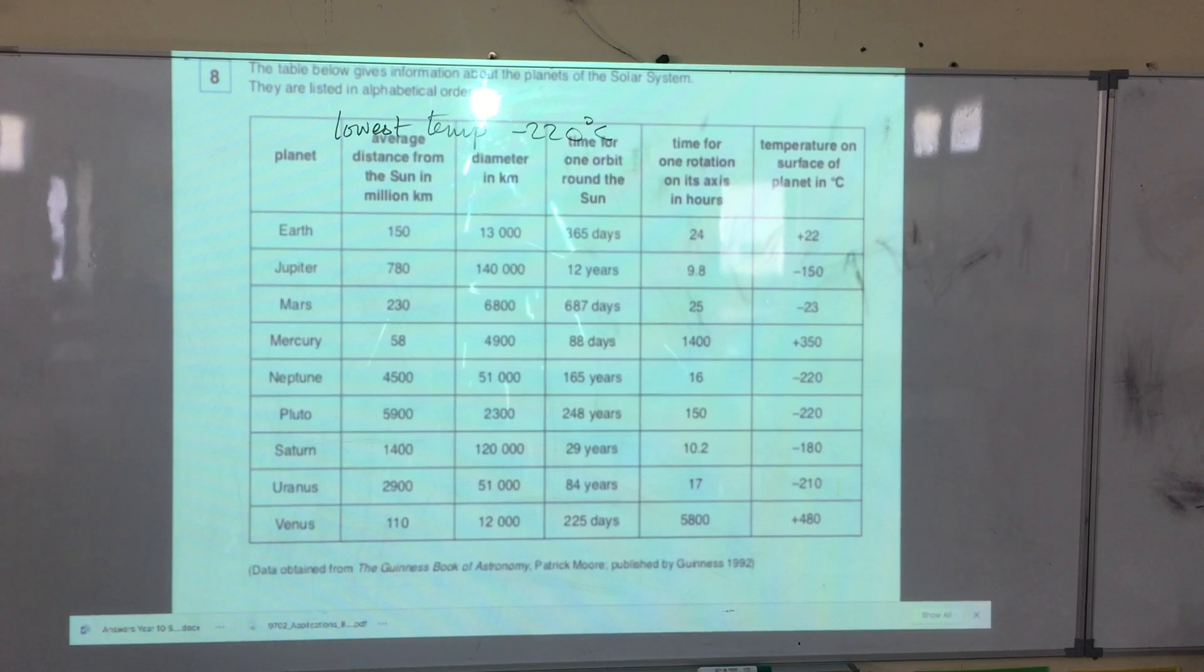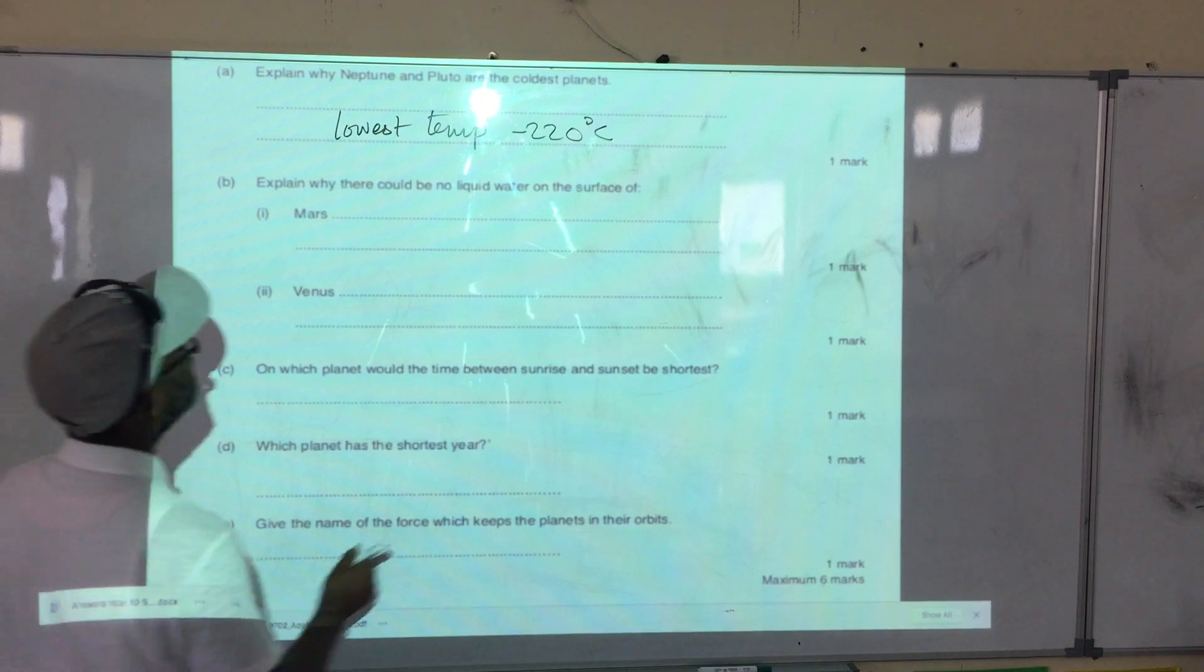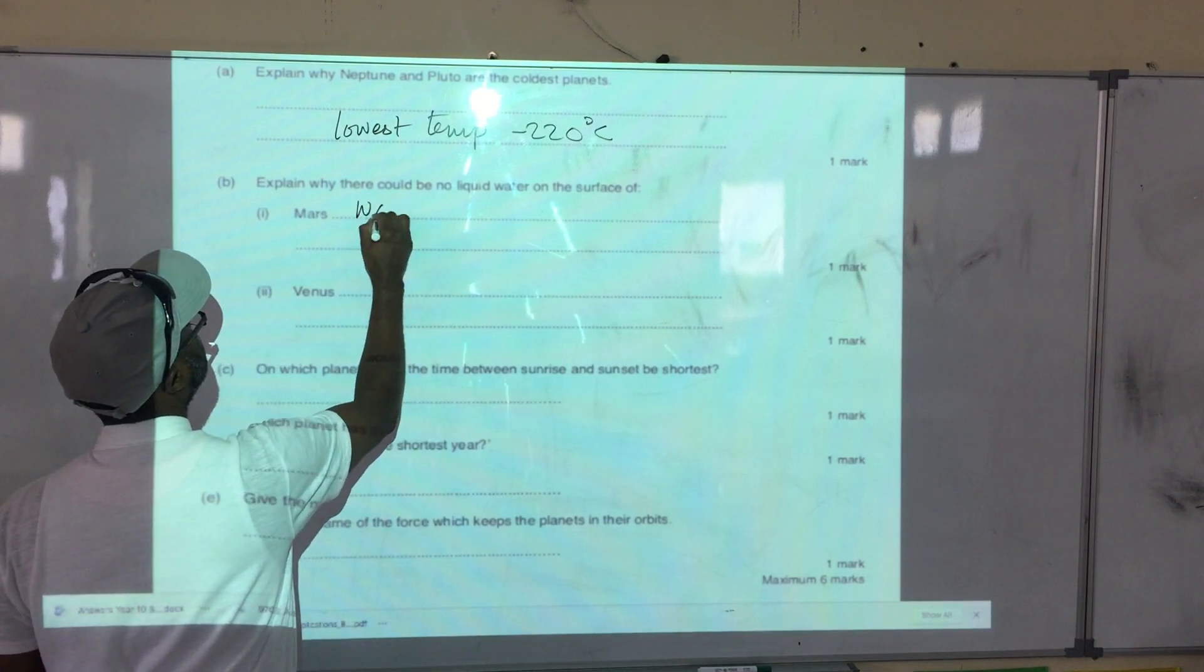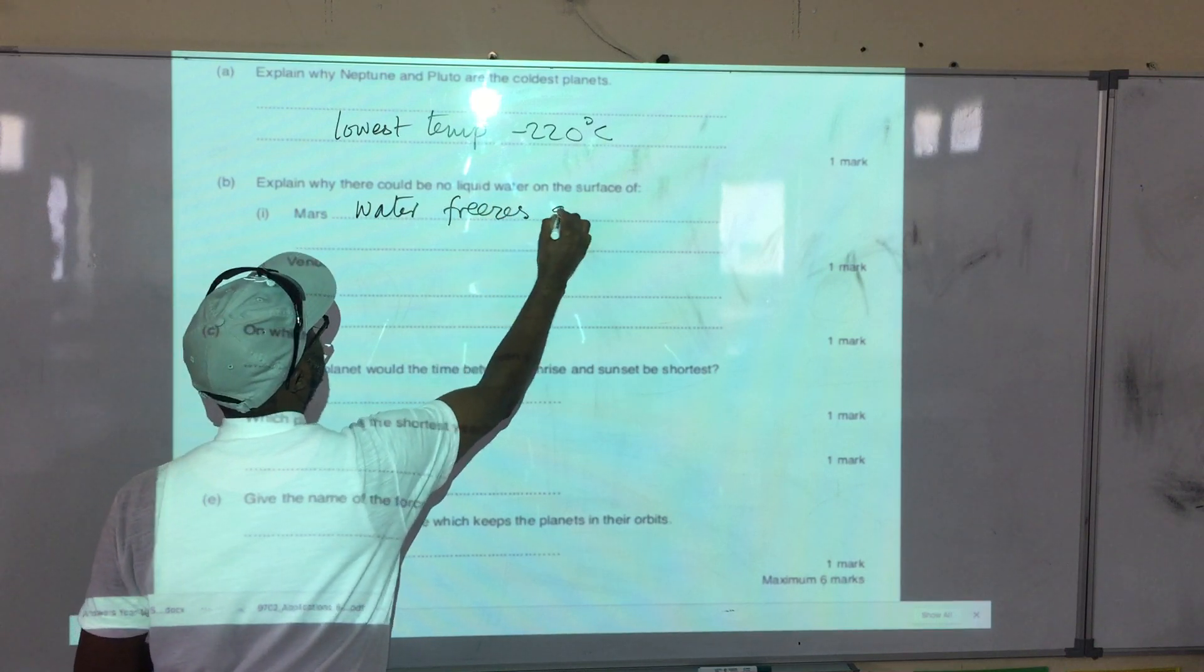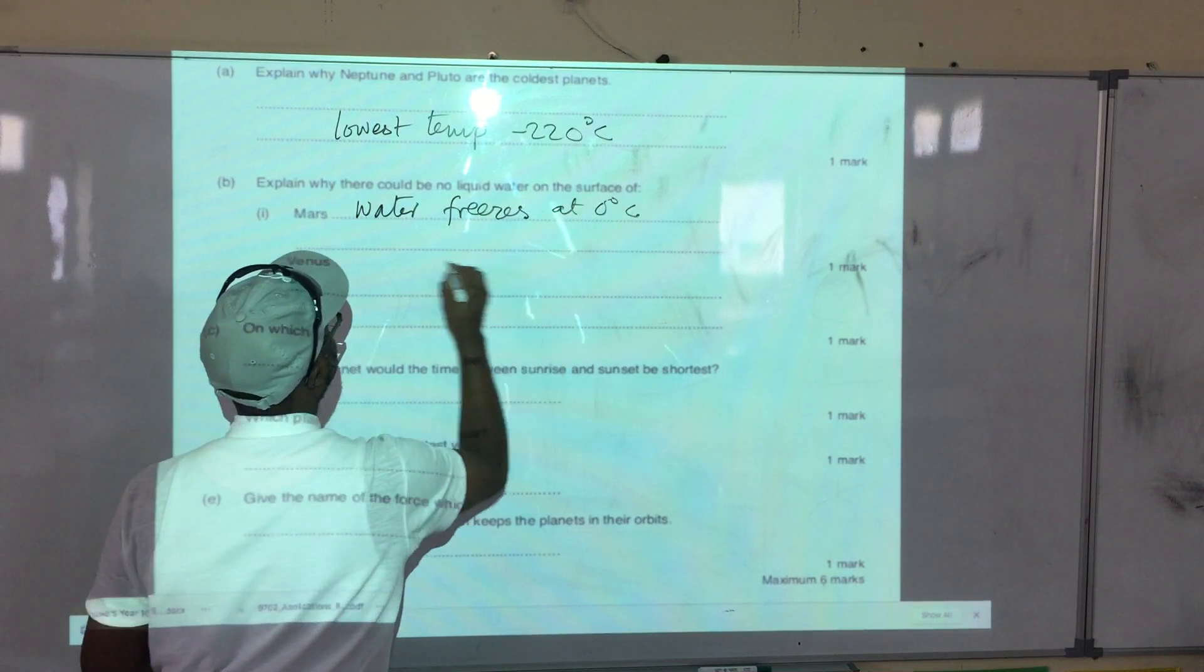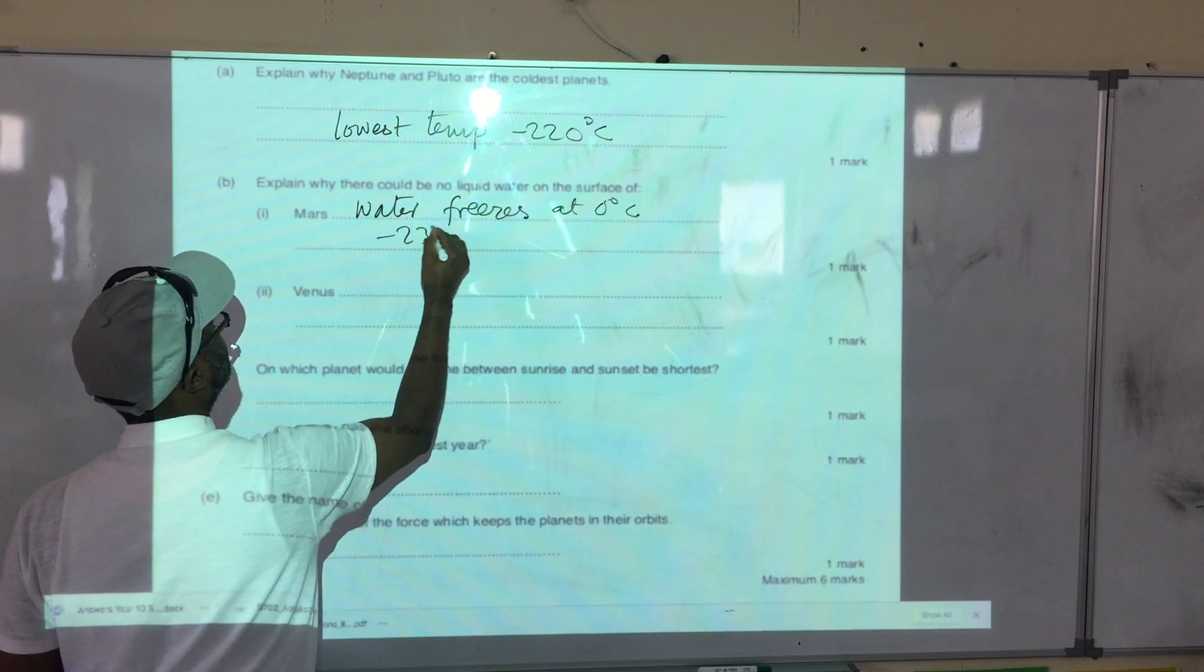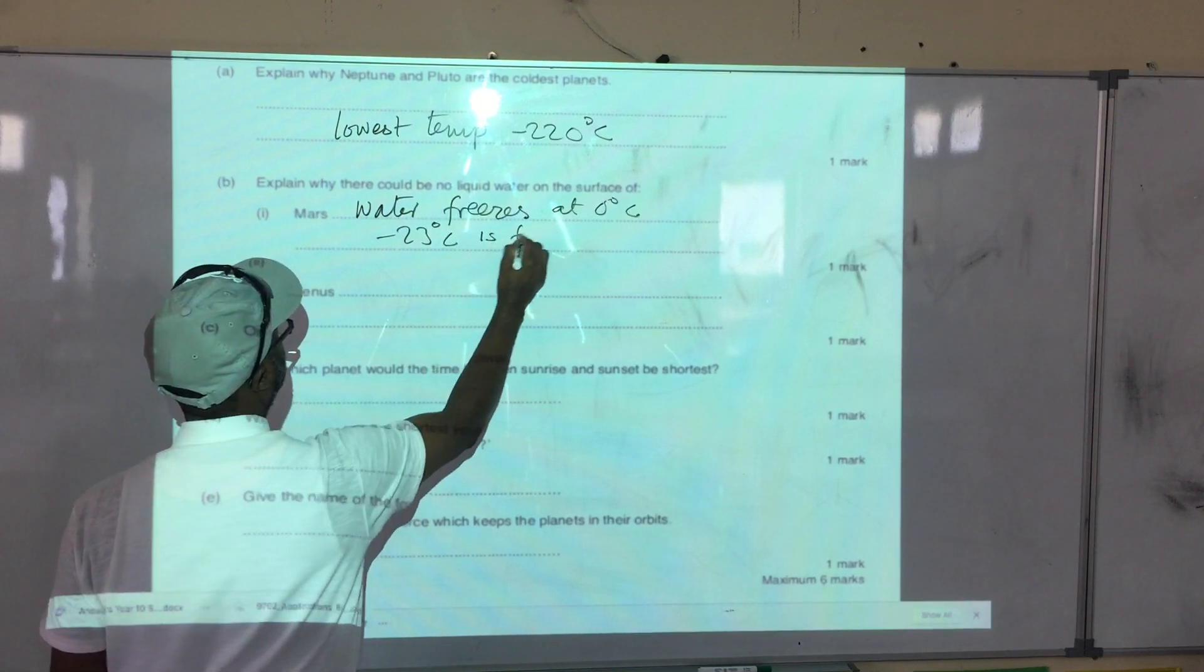At minus 23 degrees, water freezes at what temperature? Water freezes at zero degrees Celsius. So minus 23 degrees is far too cold.